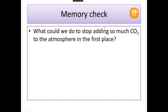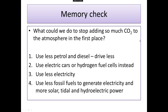Now let's have a think. What actions could we stop doing to prevent carbon dioxide going into the atmosphere in the first place? Think of the ways carbon dioxide goes into the atmosphere — which of those ways could we do less of? We could use less petrol and less diesel, drive our cars and transport less. We could switch to electric cars or hydrogen fuel cells instead of petrol and diesel. We could use less electricity, or generate electricity from more renewable sources like solar, tidal and hydroelectric power. That would stop some of the carbon dioxide going into the atmosphere in the first place.